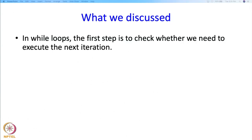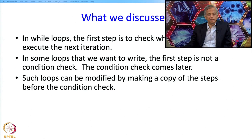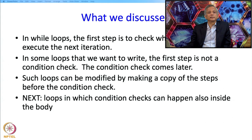In summary for this segment: in while loops, the first step is to check whether we need to execute the next iteration. In some loops we may need to do something before checking the condition. In this case, we can modify the flowchart by making a copy of the steps needed before the condition check — they must be performed before entry into the loop as well as at the end of the loop body. This is one way of dealing with such slightly tricky loops, but there is another way which we will see in the next segment.